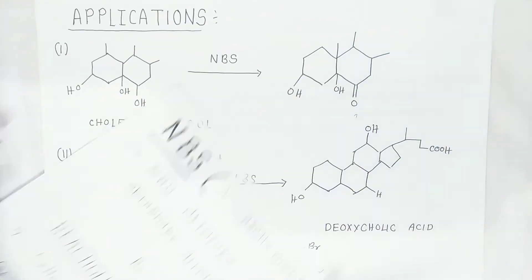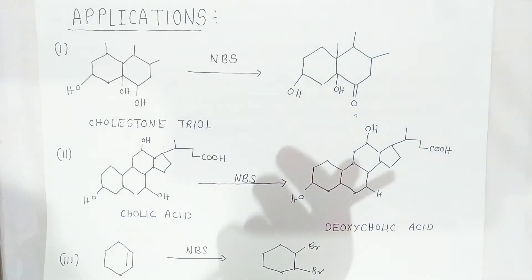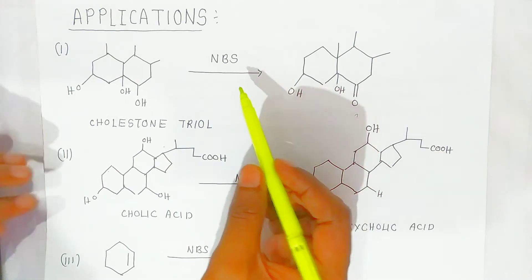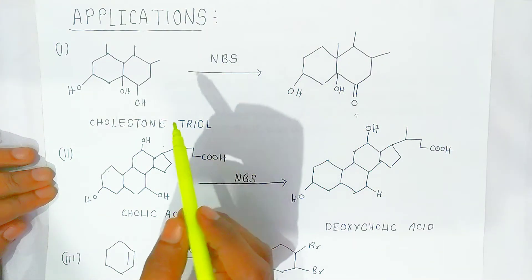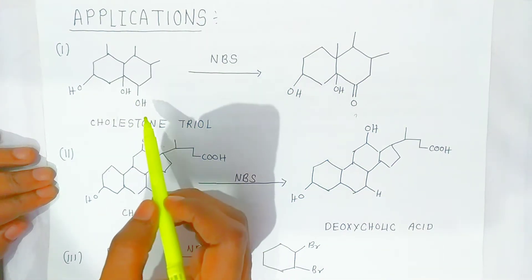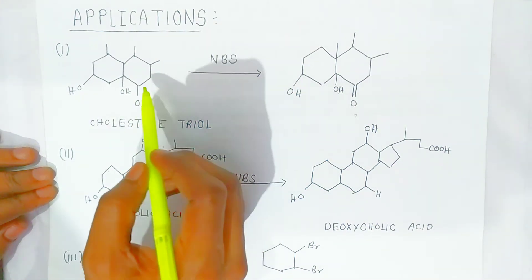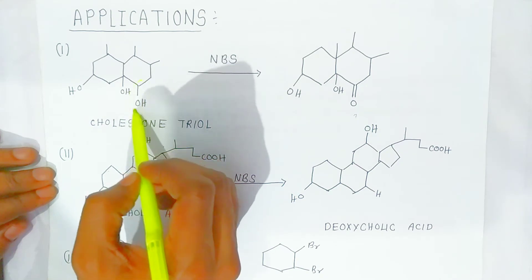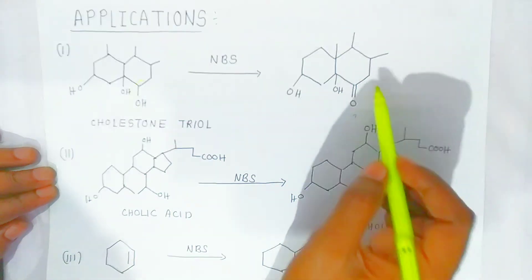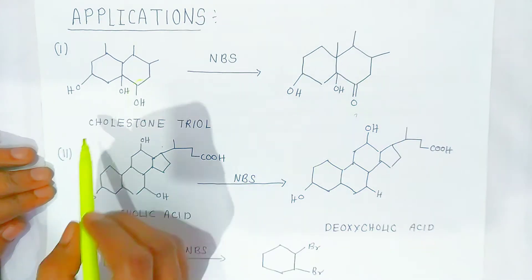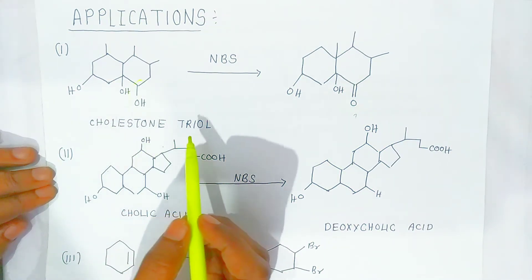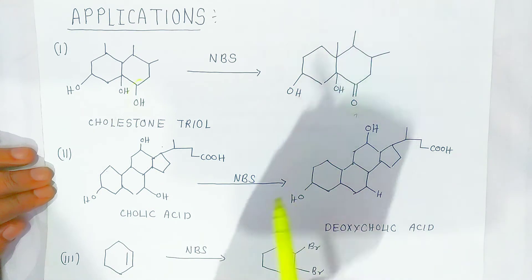Now we are going to see some applications of N-bromosuccinimide. The alcoholic group is converted into ketonic group — for example, cholesterol triol is converted into a ketonic group.